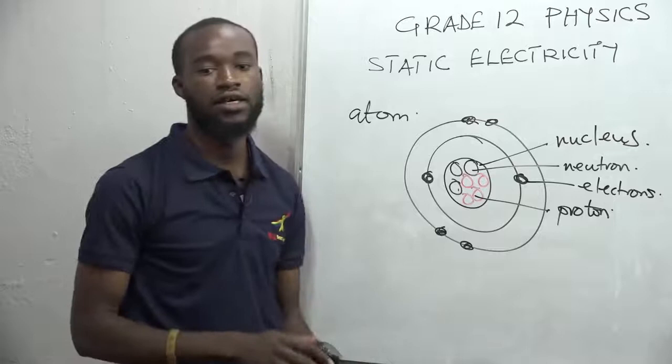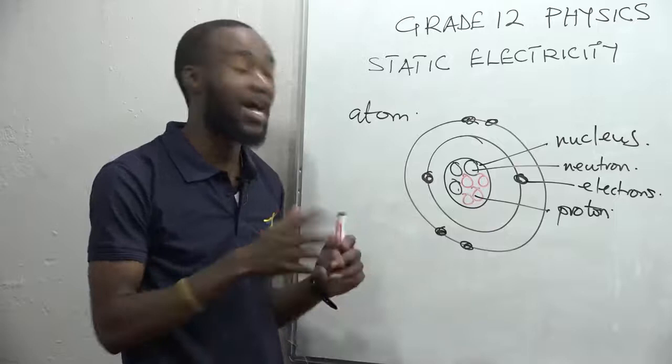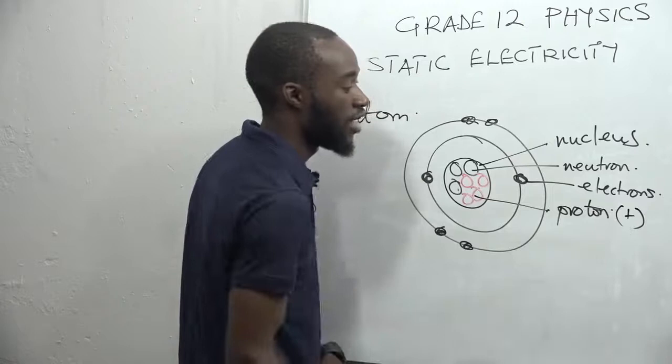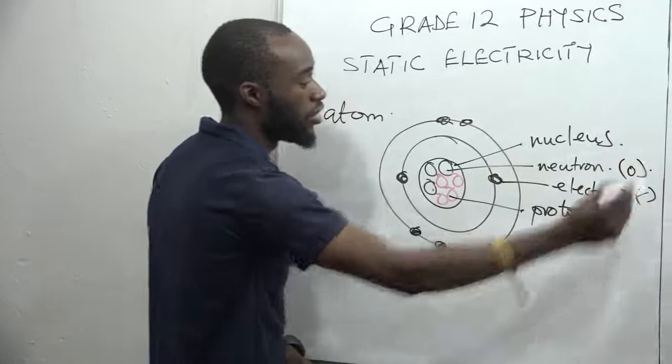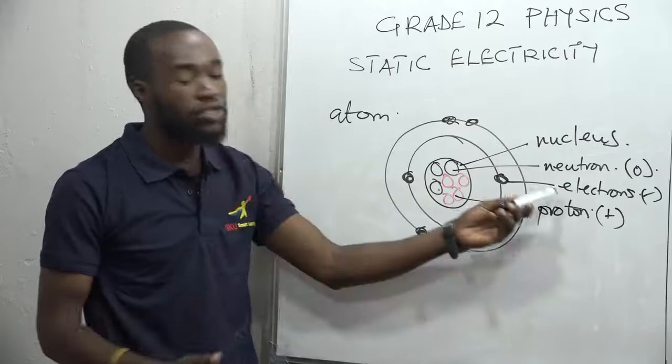As we said, electricity is the movement of charge, so these subatomic particles are charged. According to chemistry, the proton is positively charged and the electron is negatively charged. The neutron has no charge — in most cases we put zero.